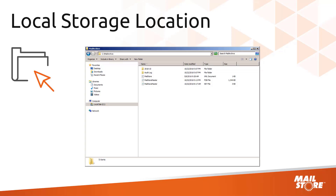Installing MailStore Server will occupy around 150 megabytes of space on your local hard disk. The databases and archive files are created by default on the local hard disk of the MailStore Server machine, and can also be stored on a NAS or network drive if required. For reasons of performance and stability, however, we recommend keeping these files on the local hard disk and simply using the integrated backup function to save your data to the NAS or network drive.